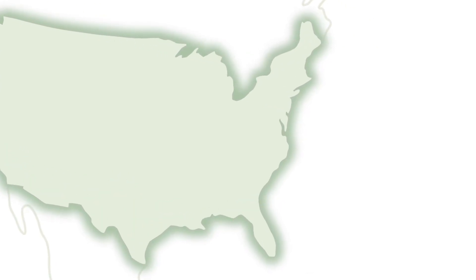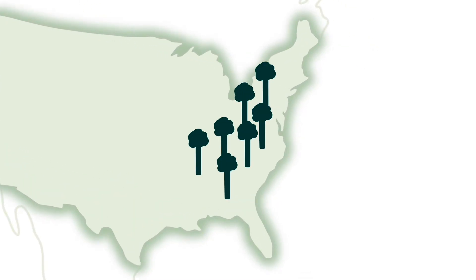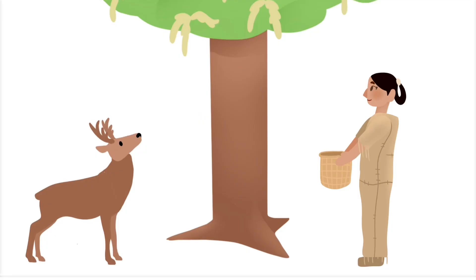Over a hundred years ago, there were billions of American chestnut trees across the eastern U.S. They made plentiful food for wildlife and humans and were an important part of the forest's ecosystems.